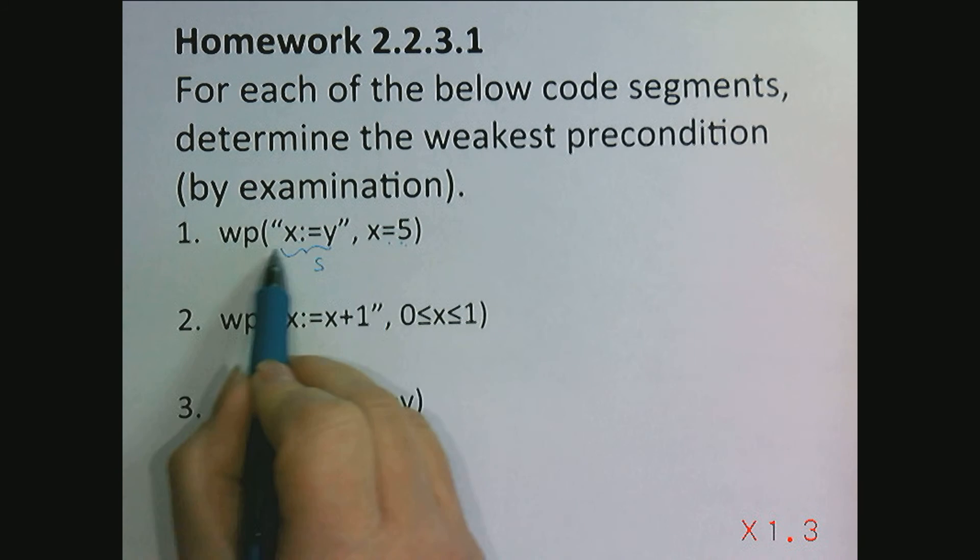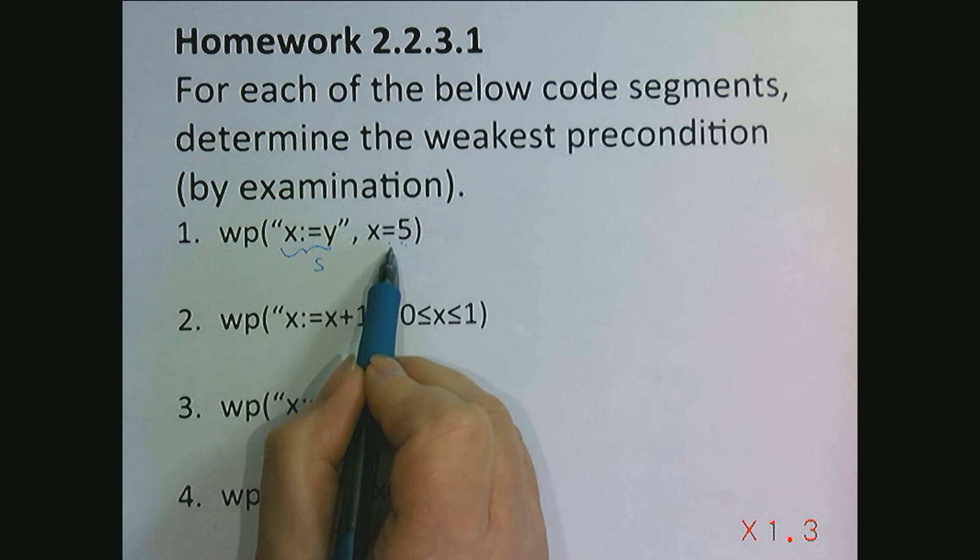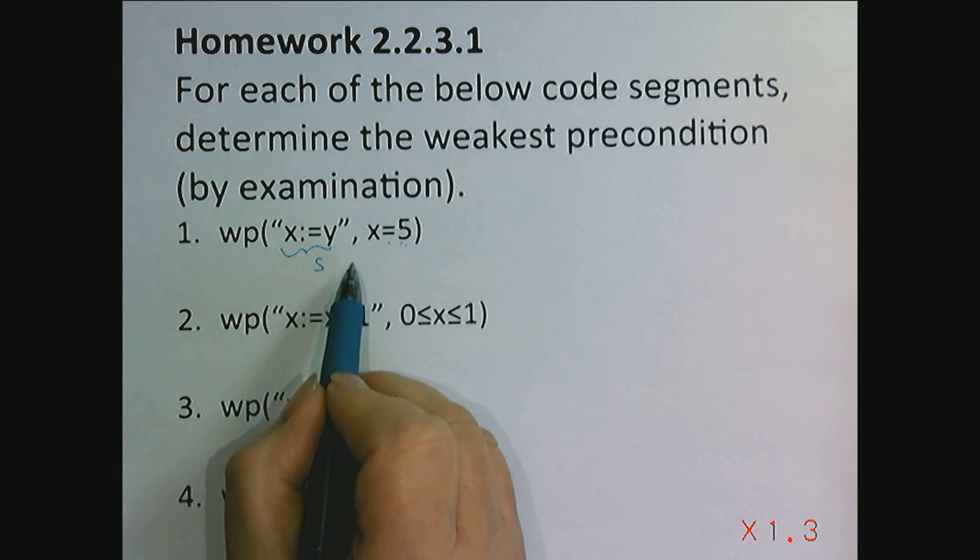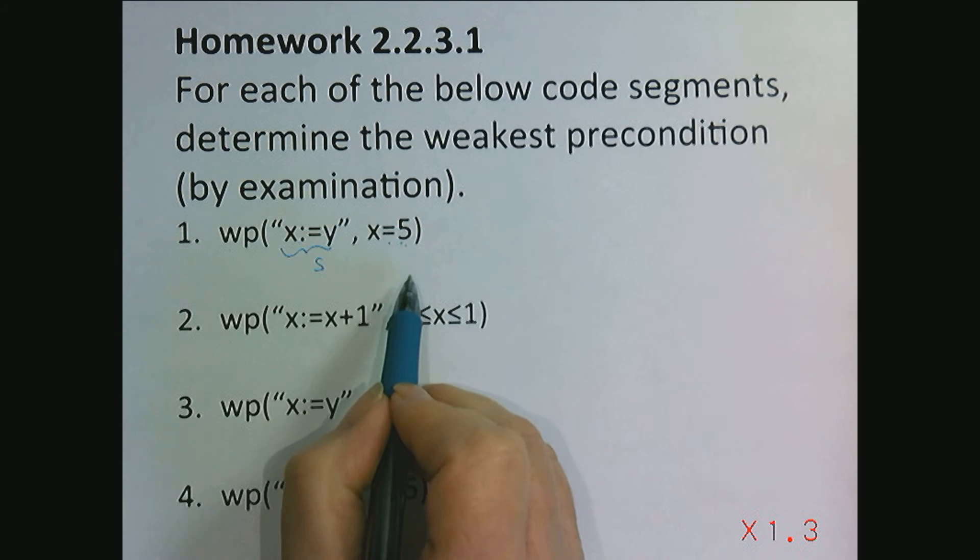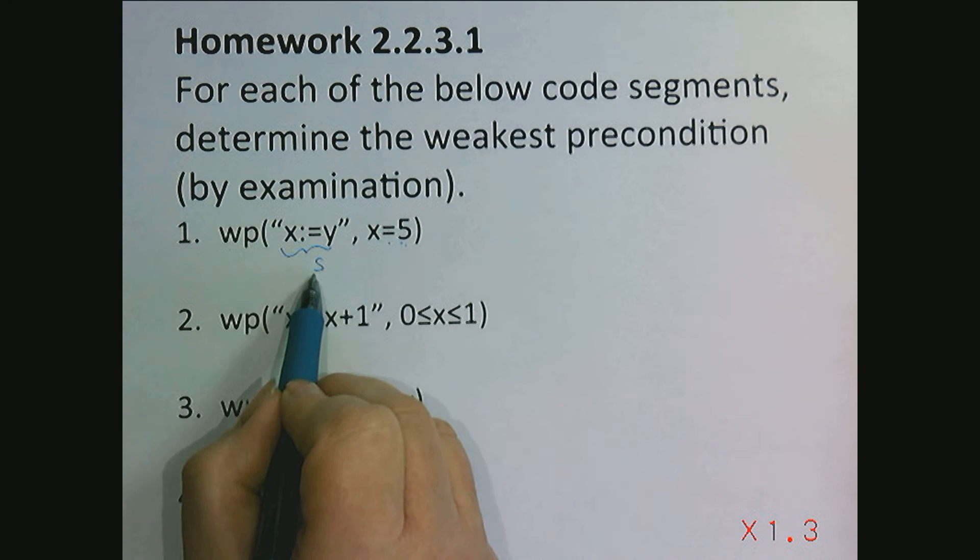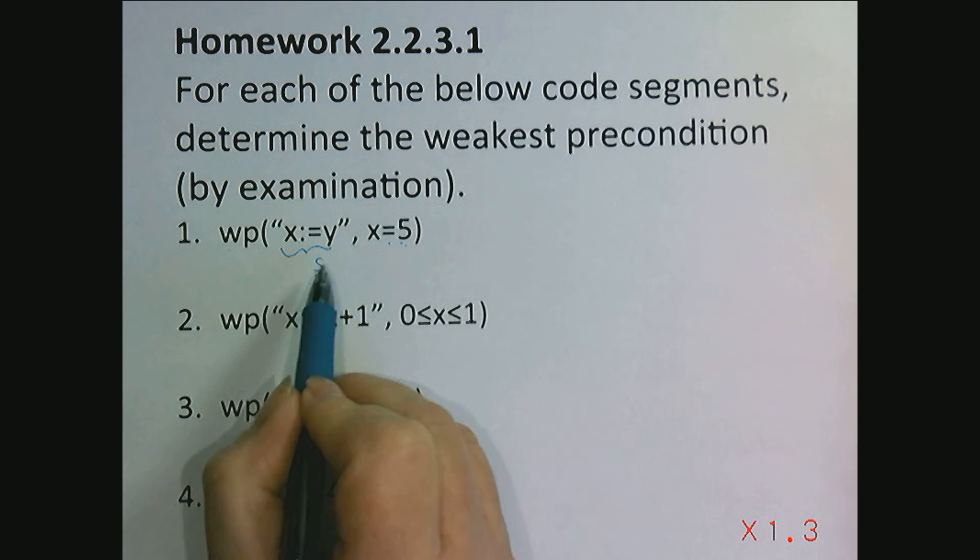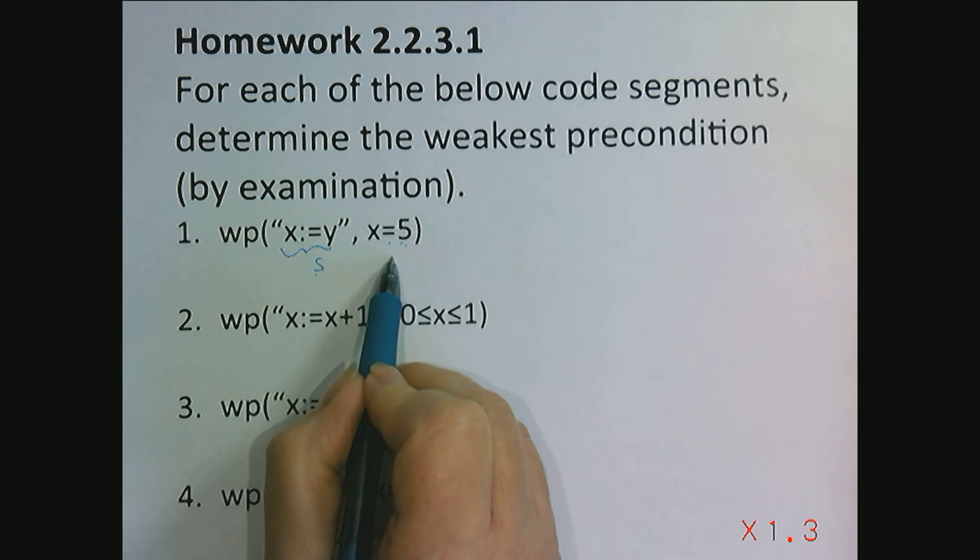Well, this weakest precondition is a predicate that describes all states that when we start in a state satisfying that predicate, when this command is executed, we end up in a state where x is equal to 5.